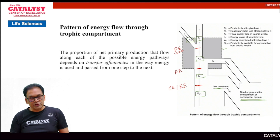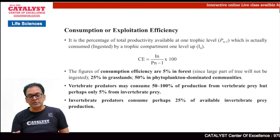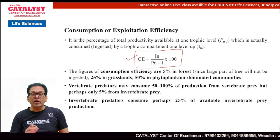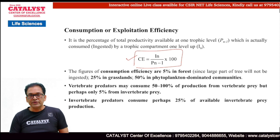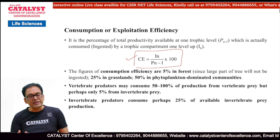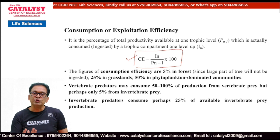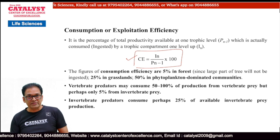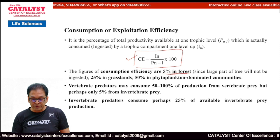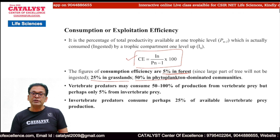Let us understand each one by one. First, consumption efficiency: what proportion of Pn-1 becomes IN is consumption efficiency — that is the formula. Consumption efficiency will depend upon what the herbivore is feeding on. If it is feeding on forest, forests are made up of trees, and the edible portion is very small compared to grass or the planktonic community. So consumption efficiency is very low in forests — about just 5%. It is higher for grassland, about 25%, and it becomes about 50% for a phytoplankton-dominated community.